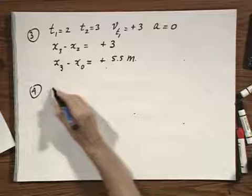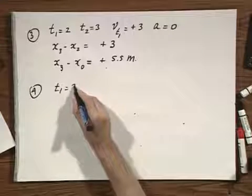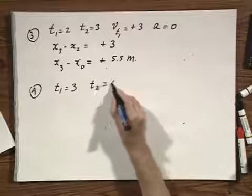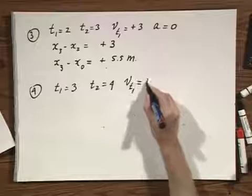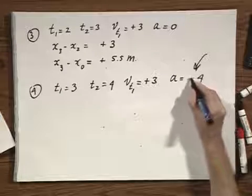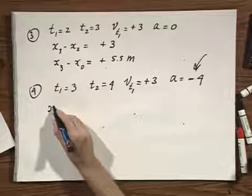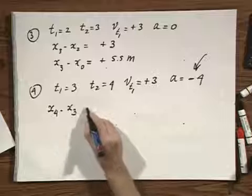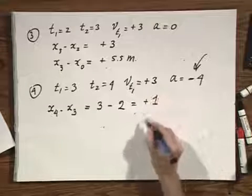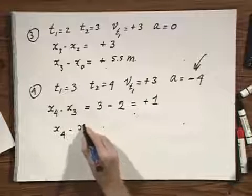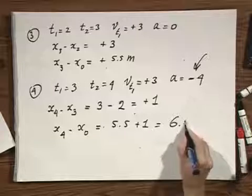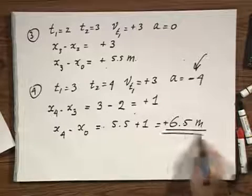For the fourth second, t_1 equals 3, t_2 equals 4. The velocity when starting this second equals plus 3, and the acceleration equals minus 4 — this minus sign is now very important. Calculating x_4 minus x_3 gives 3 minus 2, which is plus 1 meter. So the net result is that in four seconds, the object will find itself at position plus 6.5 meters on the x-axis.